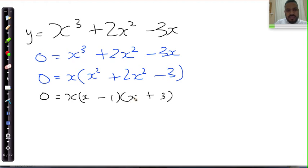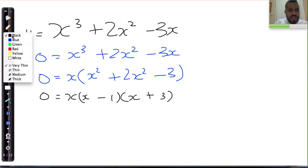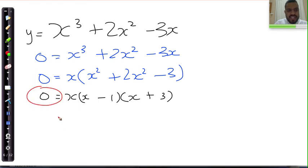Now I can simply solve it. Each of these factors are equated to 0, and because I see the equal to 0 over there I can easily say therefore x = 0 or x = 1 or x = -3.